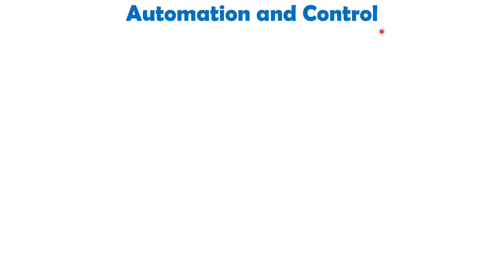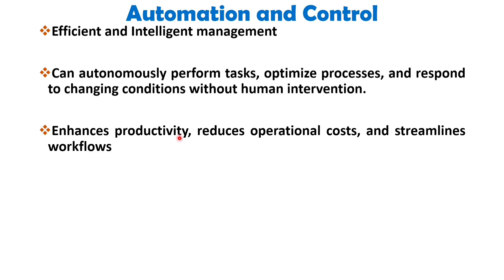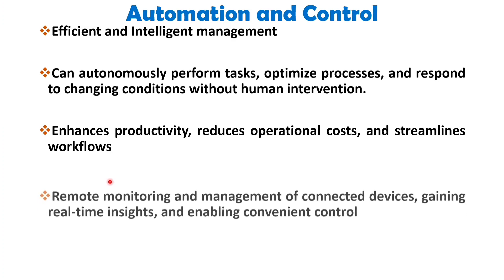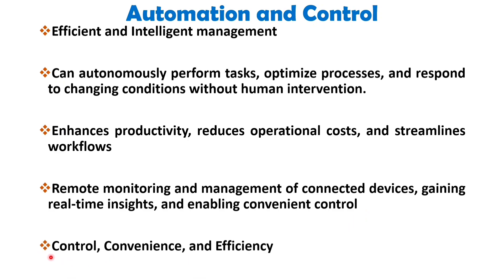The last IoT characteristic is automation and control. IoT automation and control revolutionize industries by enabling efficient and intelligent management of physical objects and systems. Through automation, IoT devices can autonomously perform tasks, optimize processes and respond to changing conditions without human intervention. This enhances productivity, reduces operational costs and streamlines workflows from manufacturing and logistics to smart homes and agriculture. With IoT control, users can remotely monitor and manage connected devices, gaining real-time insights via mobile applications or web interfaces.